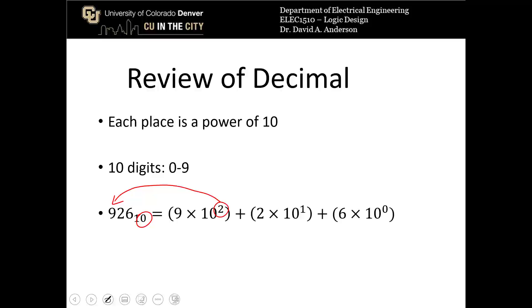Plus 2 times 10 to the 1st, where the 1st refers to the fact that this 2 is in the 1st place, plus 6 times 10 to the 0, where the 0 is the first. So that's equal to 900 plus 20 plus 6, which again is just 926 base 10.